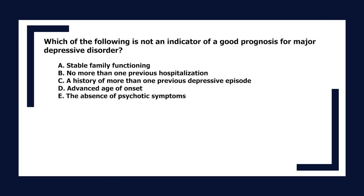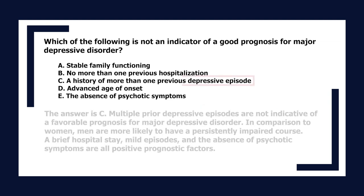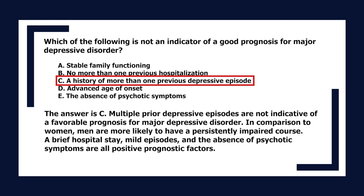Which is not an indicator of good prognosis for major depressive disorder? A. Stable family functioning. B. No more than one previous hospitalization. C. A history of more than one previous depressive episode. D. Advanced age of onset. E. The absence of psychotic symptoms. The answer is C. Multiple prior depressive episodes are not indicative of a favorable prognosis. Men are more likely to have a persistently impaired course. Brief hospital stay, mild episodes, and absence of psychotic symptoms are positive prognostic factors.